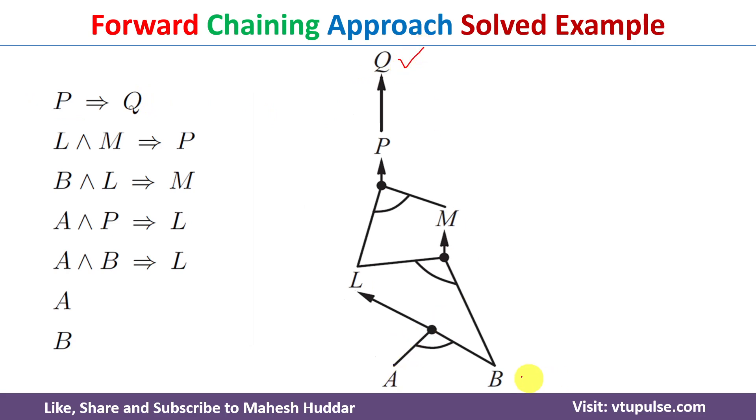We have started with A and B, we have inferred L, and then L and B were combined so that we got M. L and M were combined so that we can get P here. And when you get to this particular P, because P is true, its conclusion is also true, that is nothing but Q is also true in this case.